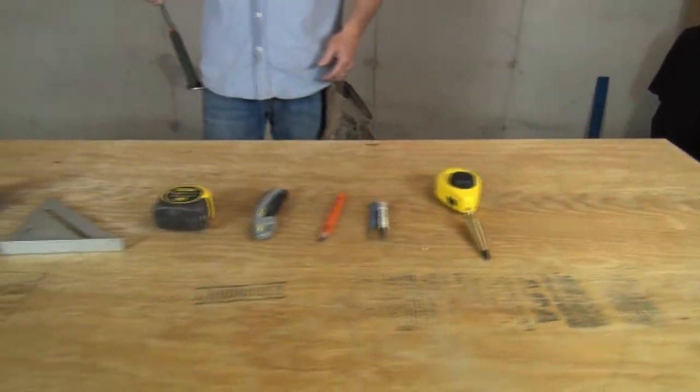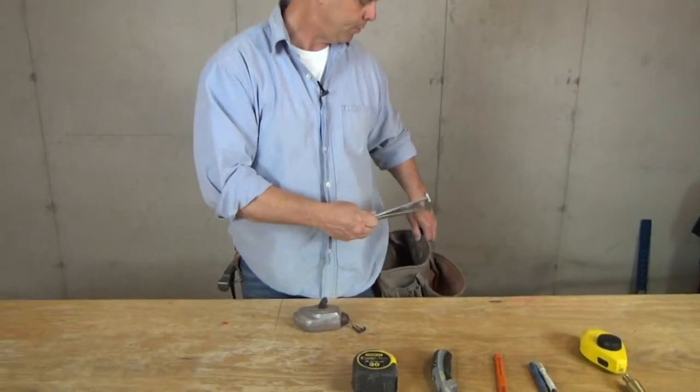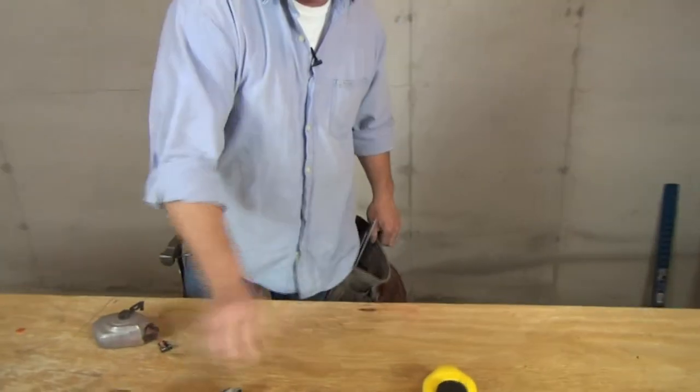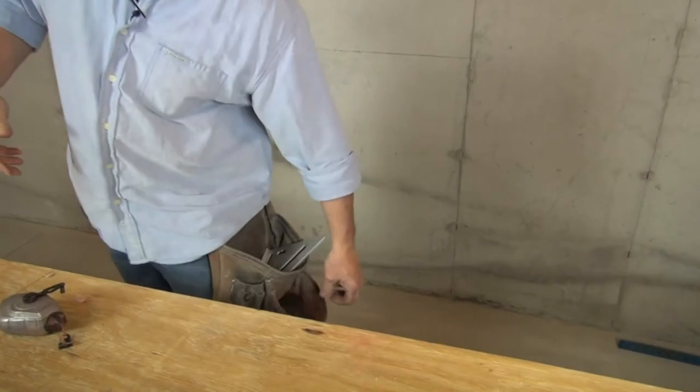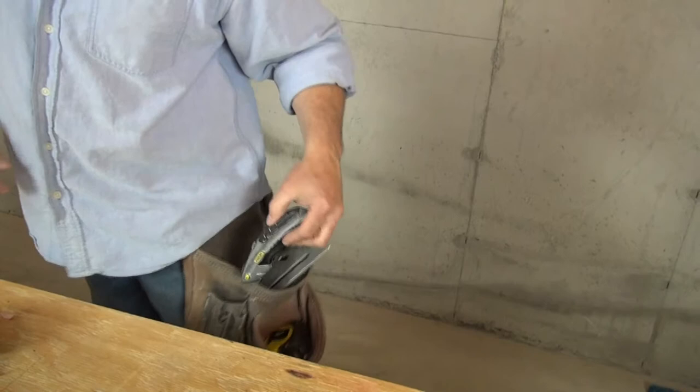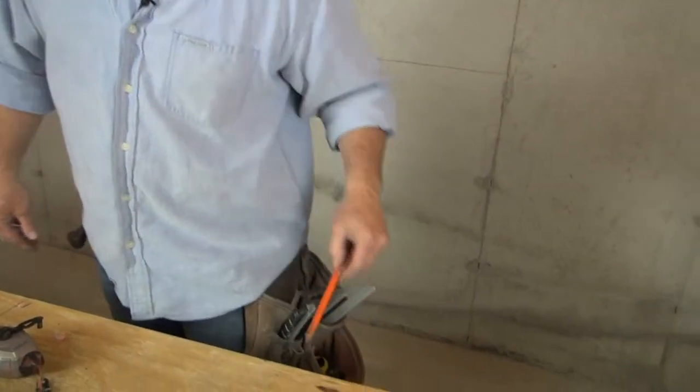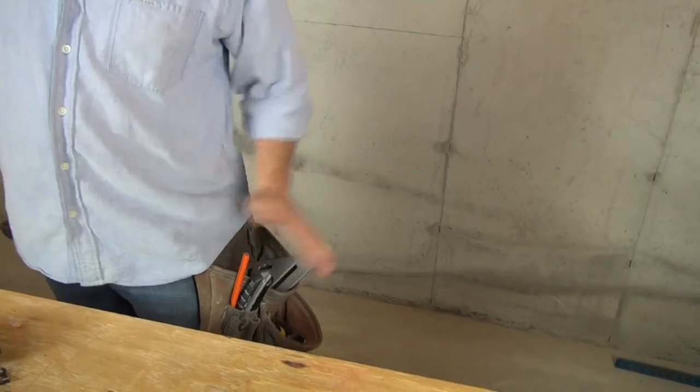So to put that stuff back in my pouch: hammer in the ring, keep my speed square in the big pouch, keep my tape measure in the small pouch on the outside where I can always grab it quick. I keep my utility blade in the spot in the belt made for utility blade. My pencil, if it's not on my ear, it's in there beside my knife.